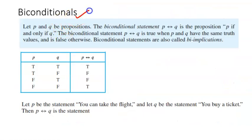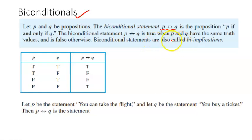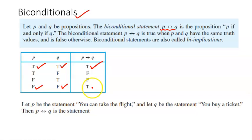Now let us talk about the biconditional statement. If p and q are two propositions, the biconditional is the proposition 'p if and only if q.' It is true when p and q have the same truth values, and false otherwise. Looking at the truth table: when both p and q are true it is true, when both are false it is true, but when p is true and q is false, or p is false and q is true, it is false.